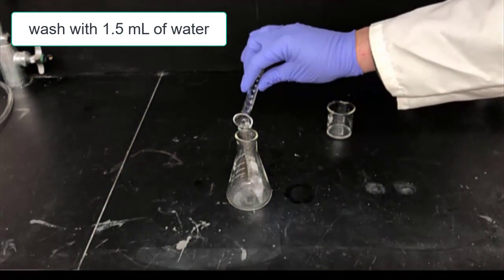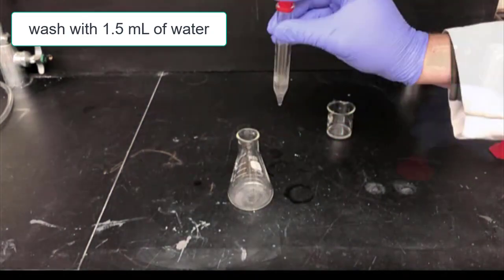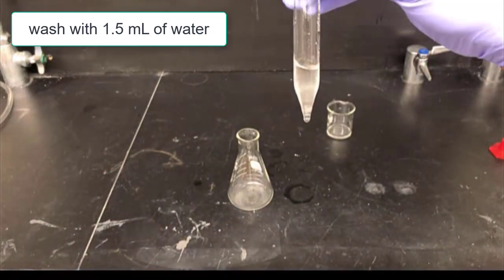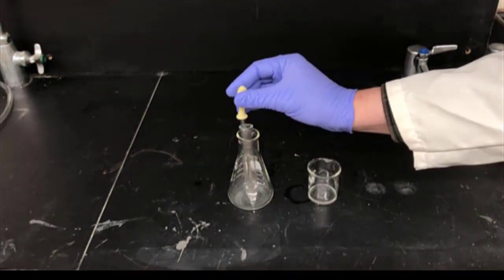Next, we'll add 1.5 milliliters of water to the centrifuge tube, agitate it, allow the layers to separate, and then remove the lower layer and discard it.